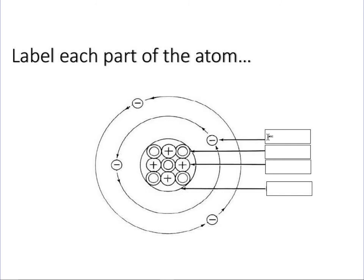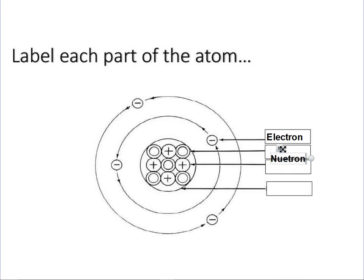There are four different parts of an atom. The first one looks like it's negative and it's on the outside, which would be an electron. The next arrow is pointing to a subparticle that's inside the nucleus and it has no charge, which means it's neutral — or a neutron. The next one is looking at a positive subparticle inside the nucleus, which is a proton. And the last one is looking at the protons and the neutrons all inside the middle, which is the nucleus.